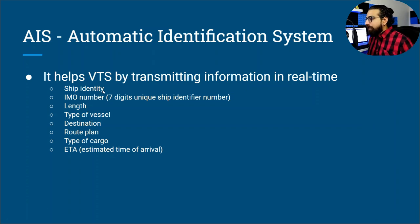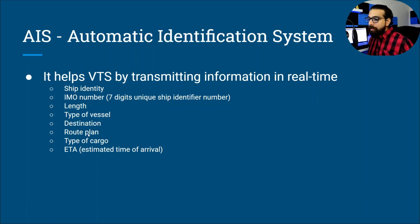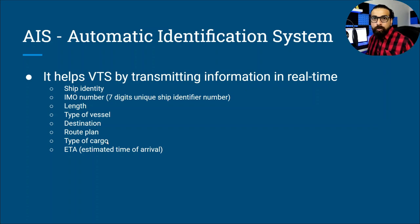The AIS system transmits the ship's identity, including the IMO number — a seven-digit unique ship identifier — as well as the vessel's length, dimensions, type, cargo destination, origin, speed, type of cargo (whether it's a cargo ship, passenger ship, tanker, cruise, or fishing vessel), and estimated time of arrival.